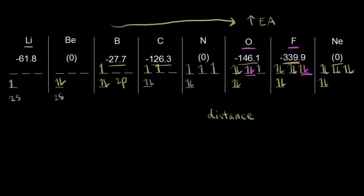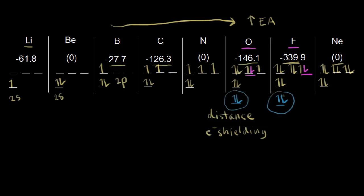Another factor is electron shielding, which refers to inner shell electrons. For both oxygen and fluorine, since they're in the second period, there are two electrons in the 1s orbital. These inner shell electrons shield the outer shell electrons from the effect of the nucleus. But in both cases, we have the same number of inner shell electrons for oxygen and fluorine, and in both cases the added electron is going into 2p orbitals at a similar distance. So electron shielding is pretty much the same for both oxygen and fluorine.